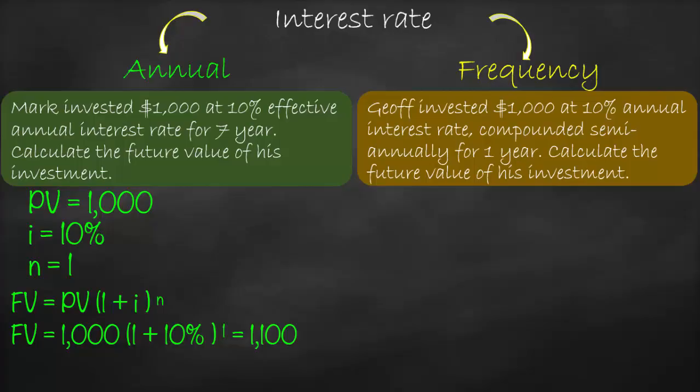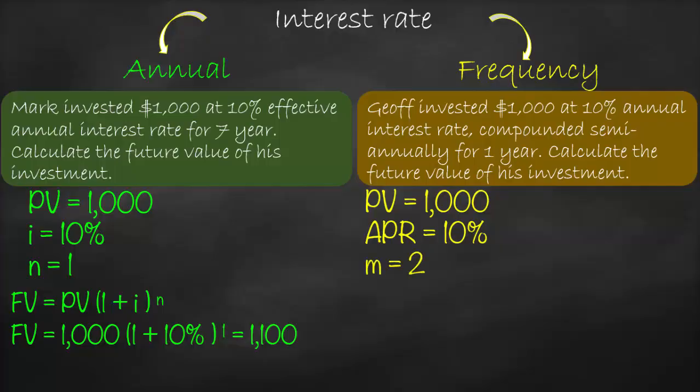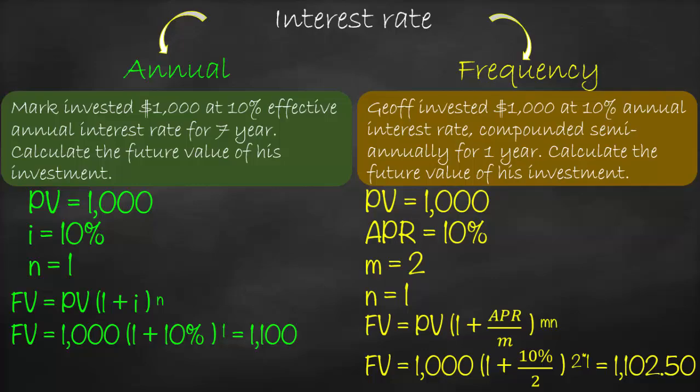For a frequency example: Jeff invested $1,000 at 10% annual interest rate, compounded semi-annually, for 1 year. Present value is $1,000, APR is 10%, frequency m equals 2 (every 6 months per year), and n is 1 year. Since interest and time must share the same unit, the future value formula becomes: FV = PV × (1 + APR/m)^(m×n) = 1,000 × (1 + 10%/2)^(2×1) = $1,102.50. This method adjusts the time to match the interest period — converting interest to every 6 months, and multiplying n by m accordingly.